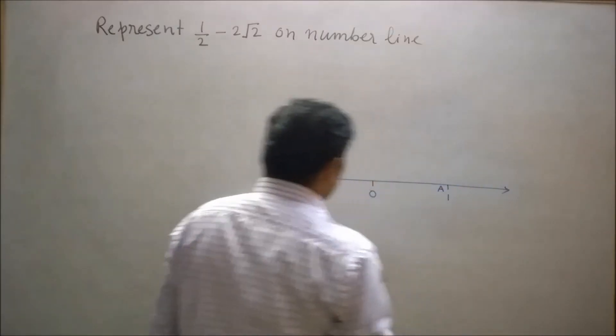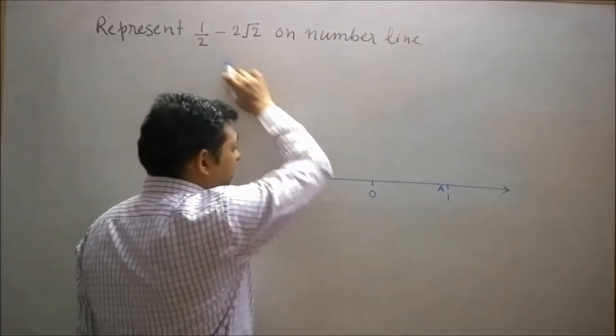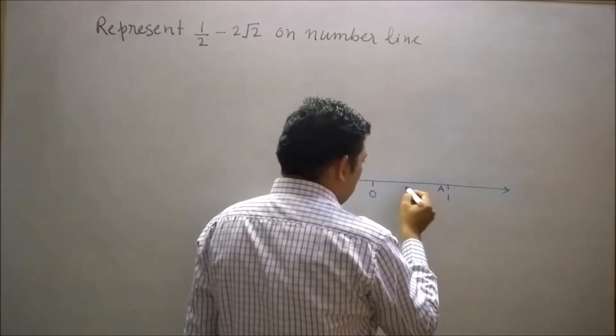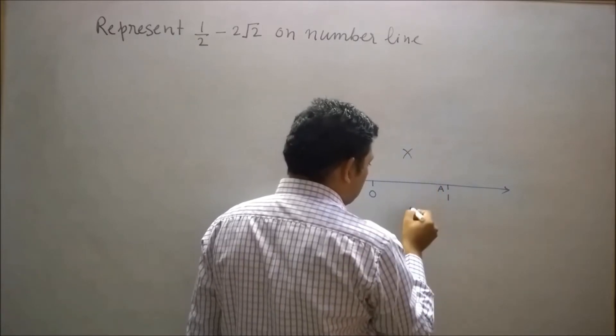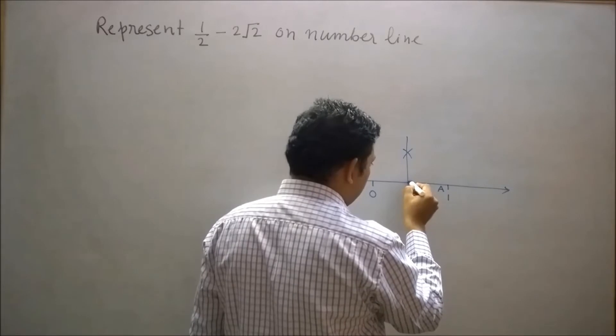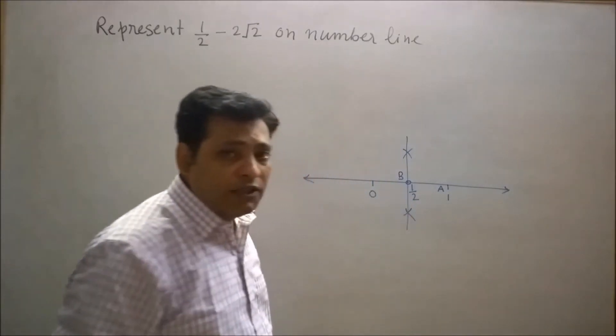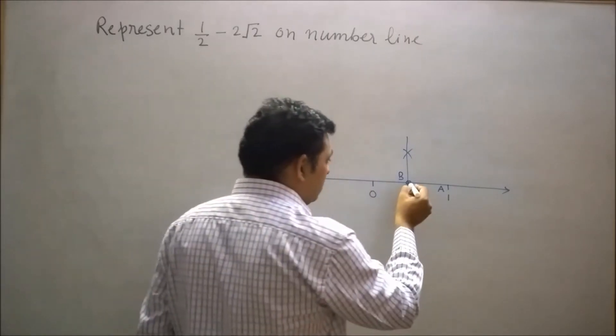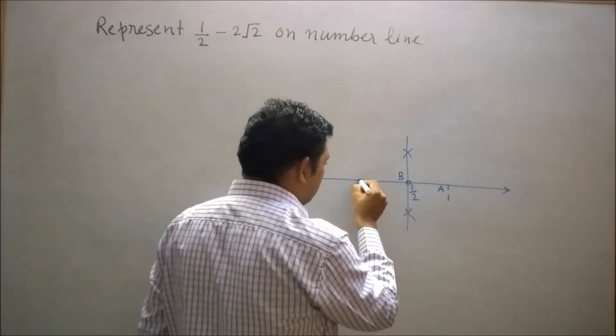Now try to represent half on number line. So I will bisect the line segment OA with the help of compass. Let's say this point is B. Now consider B as an initial point. Now move 1 unit distance to the left side of B. Let's say this point is C.